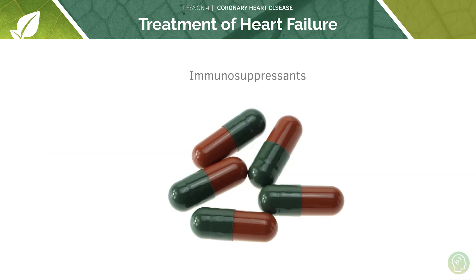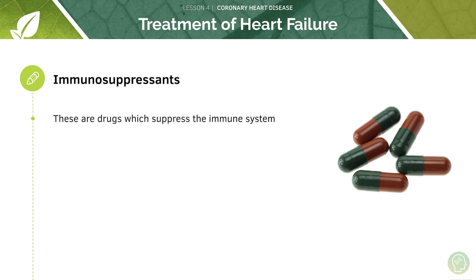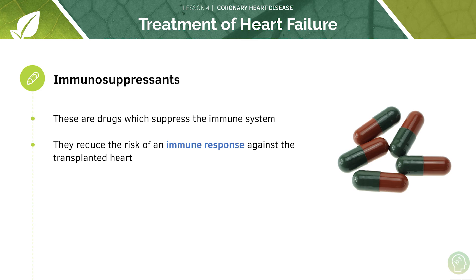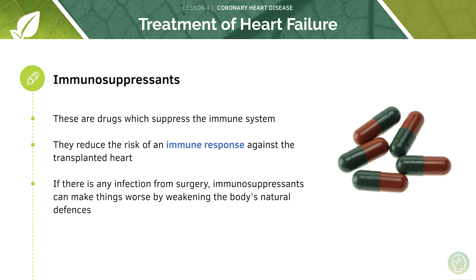Immune rejection occurs when the body's immune system senses an object as foreign and acts to defend against it — this can occur in the case of any transplant. Therefore immunosuppressants are given to suppress the immune system and reduce the chance of it attacking the new heart. However, this global immunosuppression can cause a complication: if there is any infection from surgery, the weakened immune defenses make the patient more susceptible to other infections.